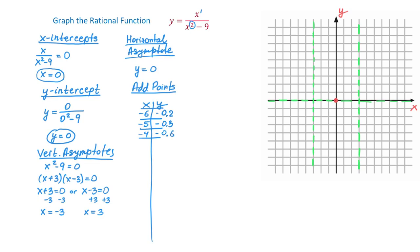Let's plot these points and make the left side of the graph. The first point is 6 units to the left and 0.2 down. The second point is 5 units to the left and 0.3 down. The next point is 4 units to the left and 0.6 down. Let's connect these points — as we move down the graph gets closer and closer to the vertical asymptote but it cannot touch it.